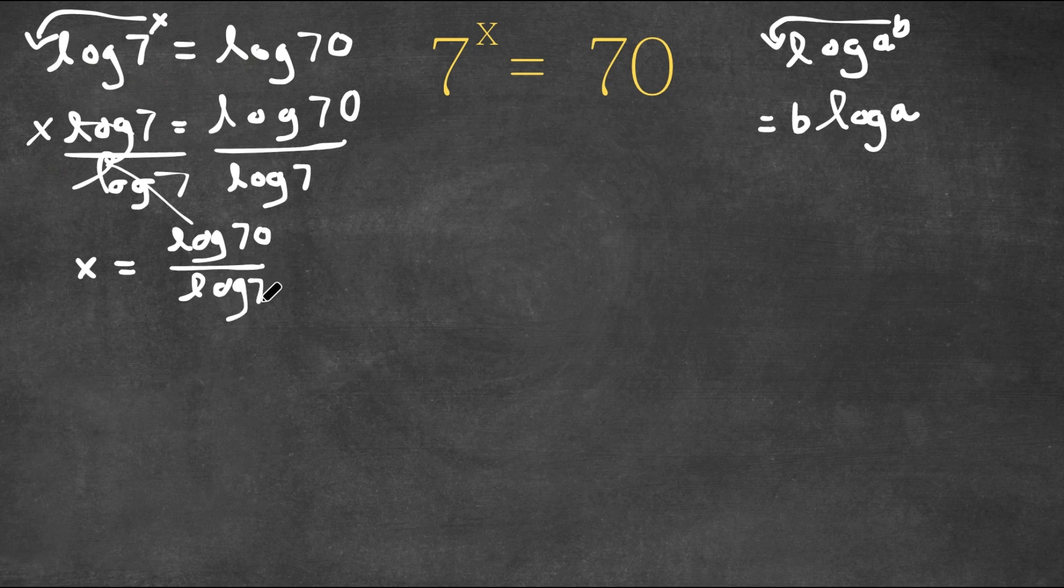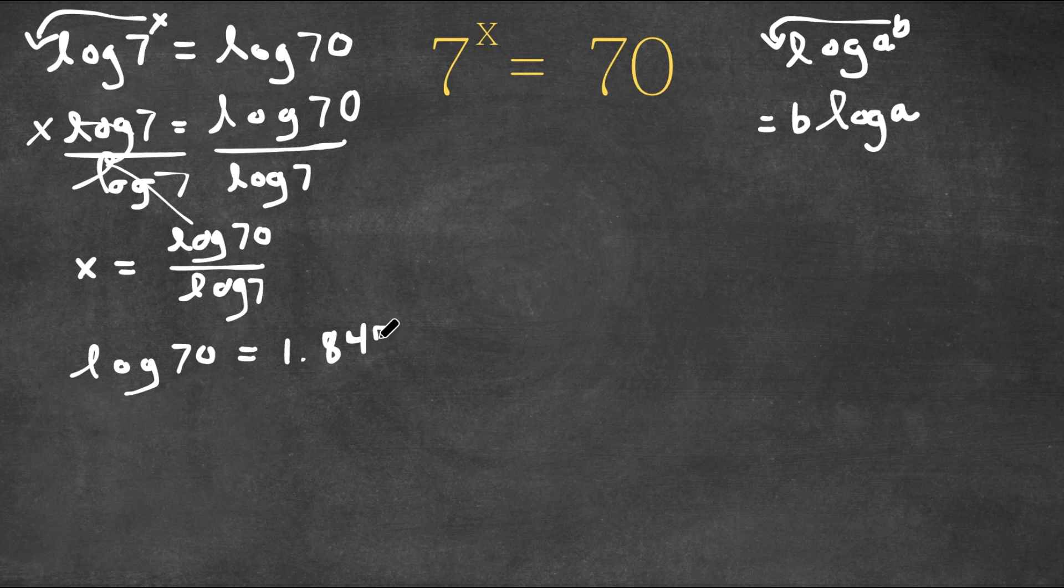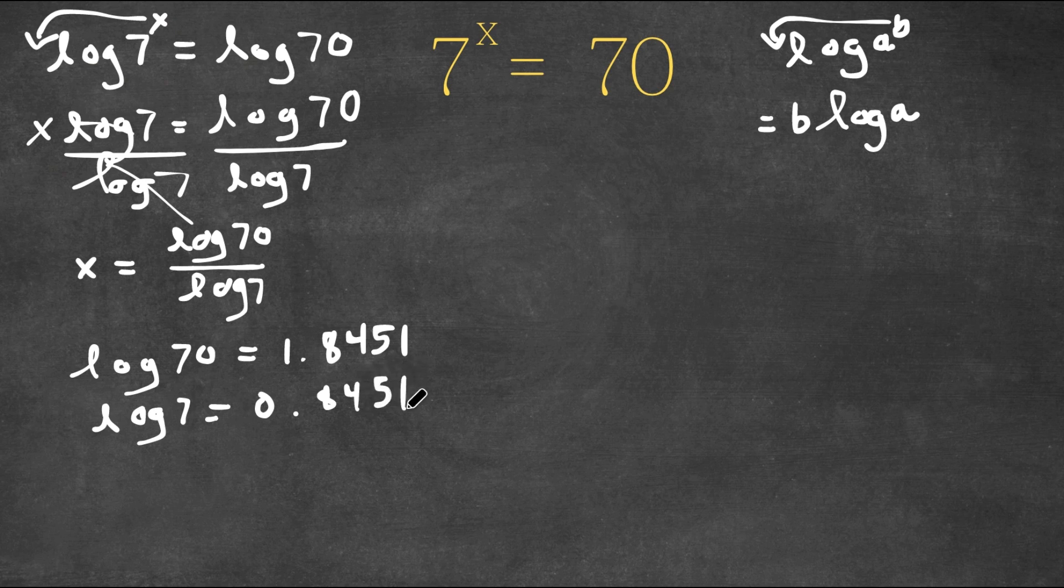Now the value of log 70 is equal to approximately 1.8451, and log 7 is equal to 0.8451.